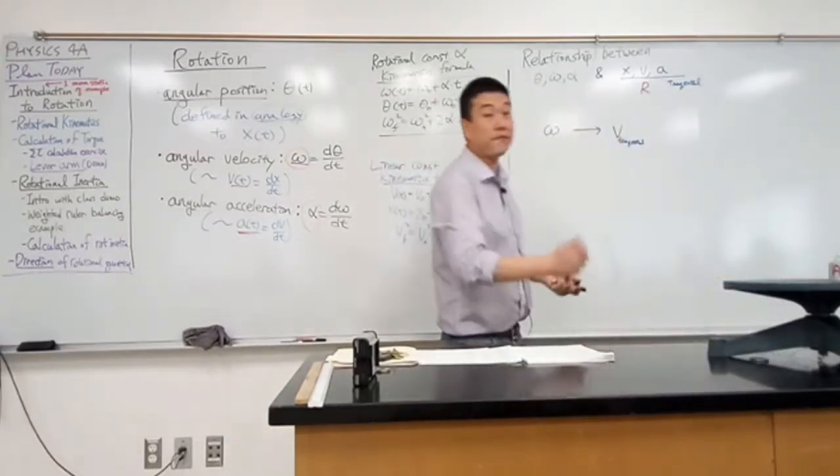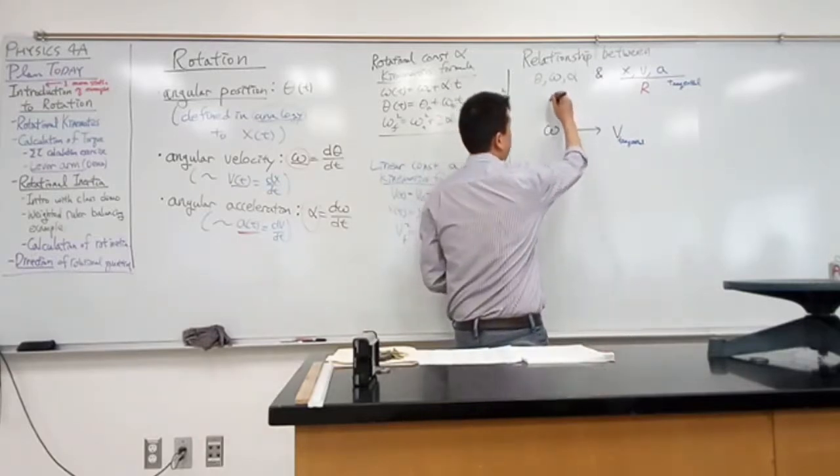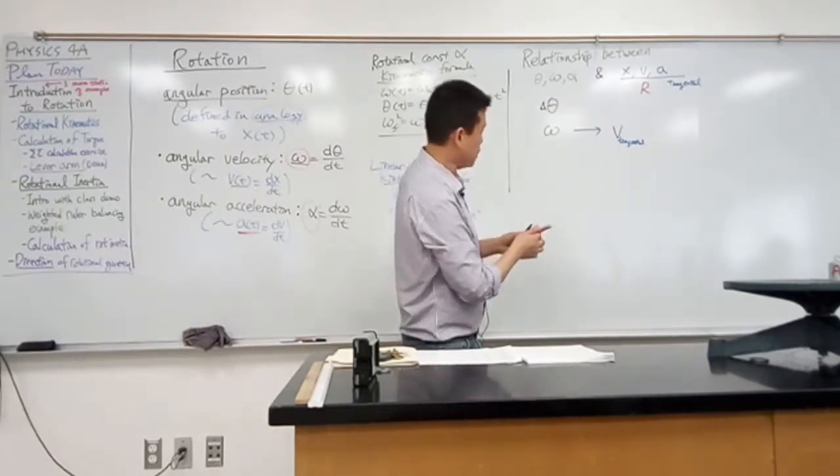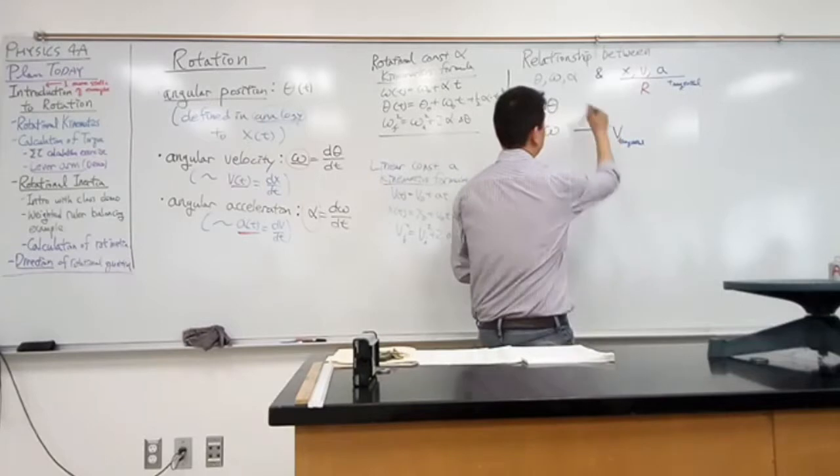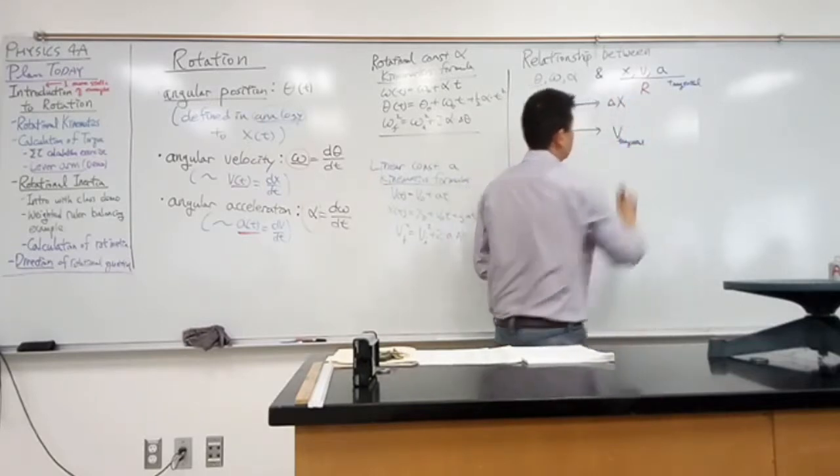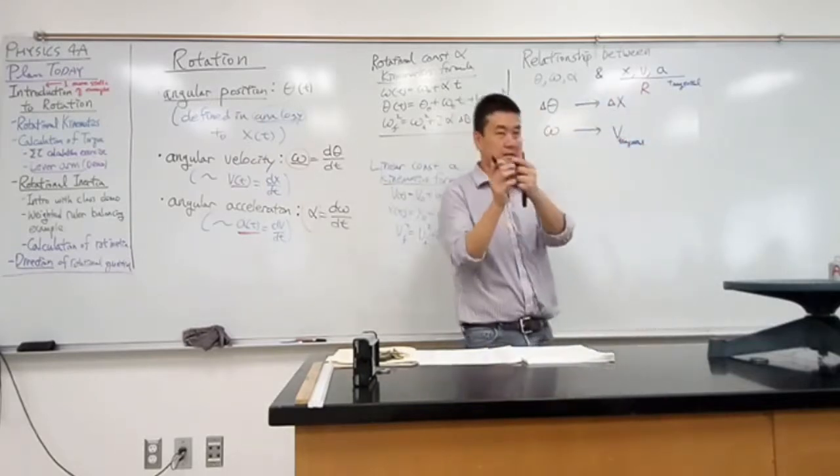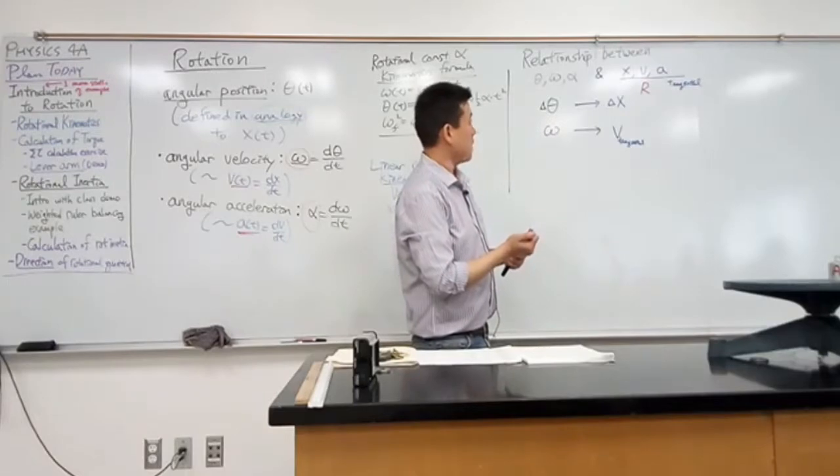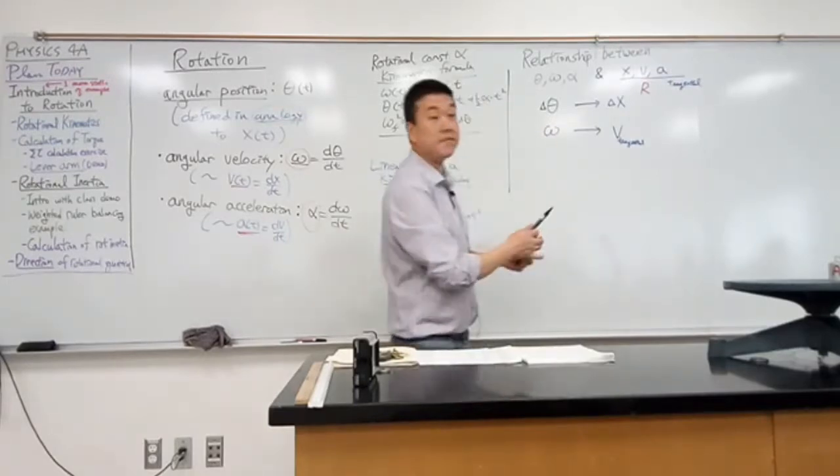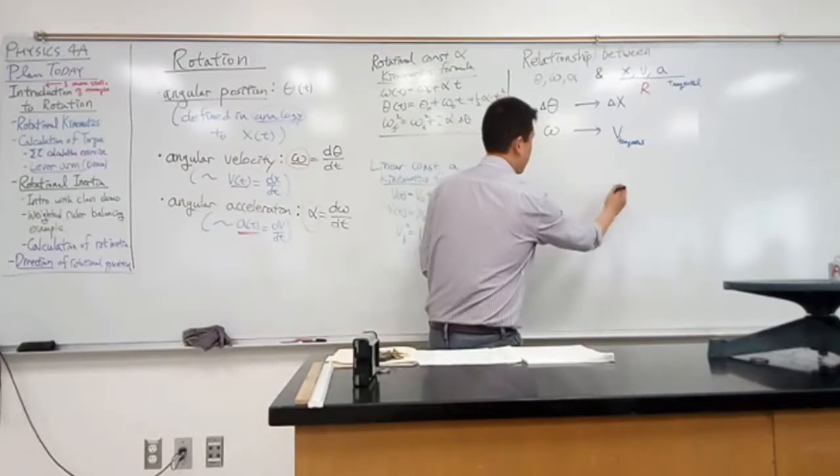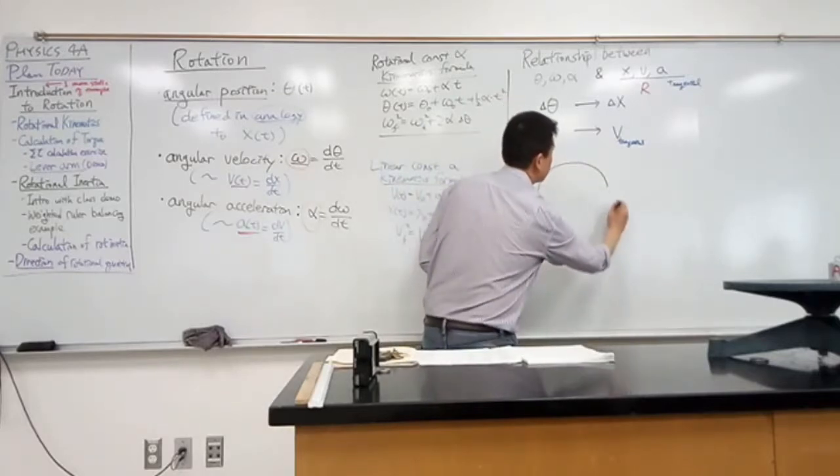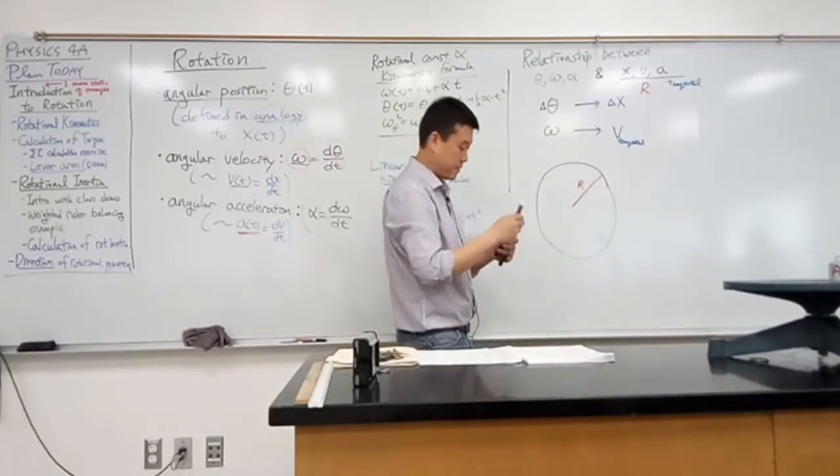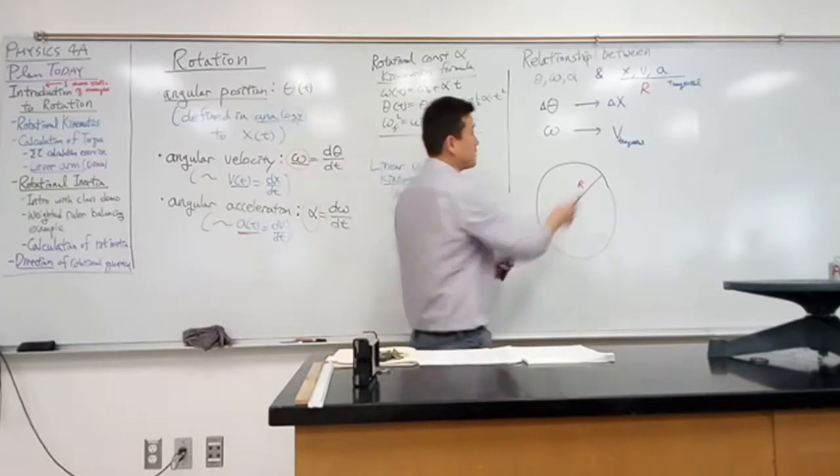Let me go back to the position example - maybe it's easier because you can visualize it better. Let's say I have a change in angular position, and from knowing the change in angular position, I want to be able to get to some change in position along the circumference of the circle. Let me draw a picture. So I draw this circle of radius r. Someone was saying arc length, right?